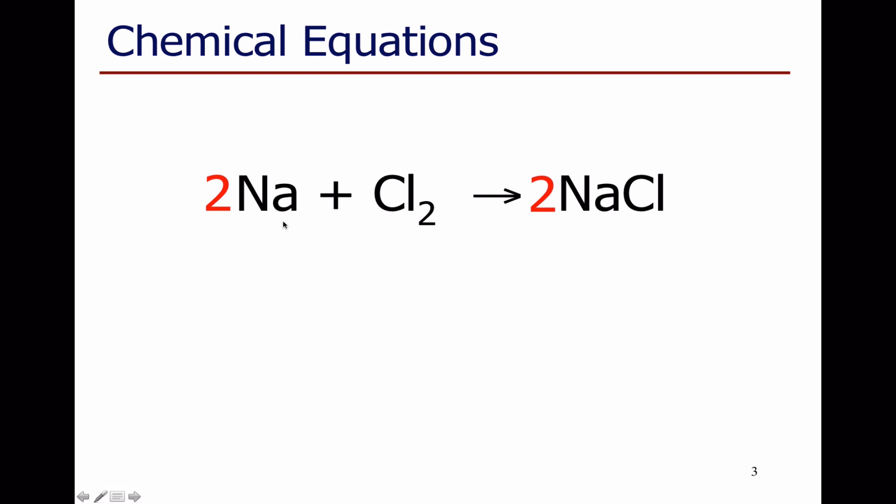Two sodiums react with one Cl2 to give us two NaCls. This means that we'll need twice as much sodium as we have chlorine molecules to get the reaction to work properly. Every time we react one chlorine molecule, we'll get two lots of NaCl.